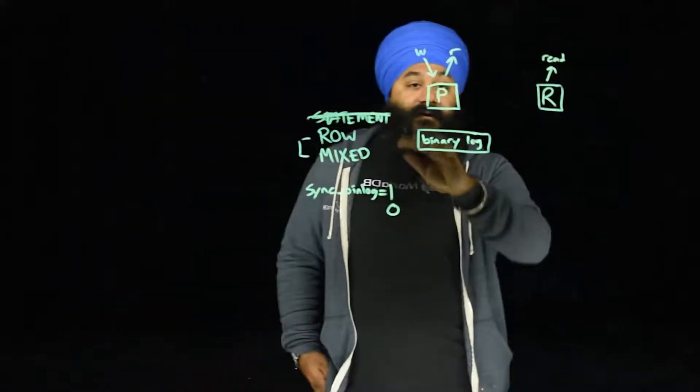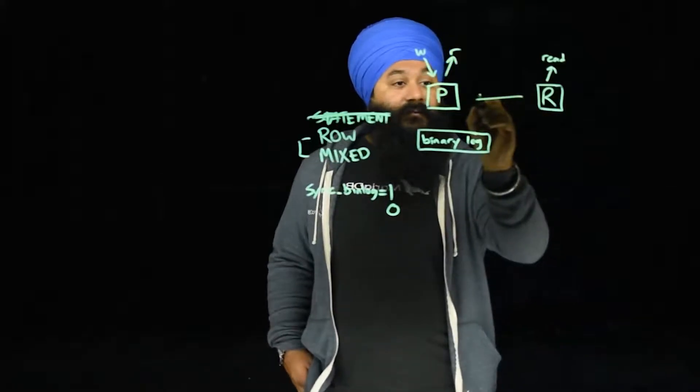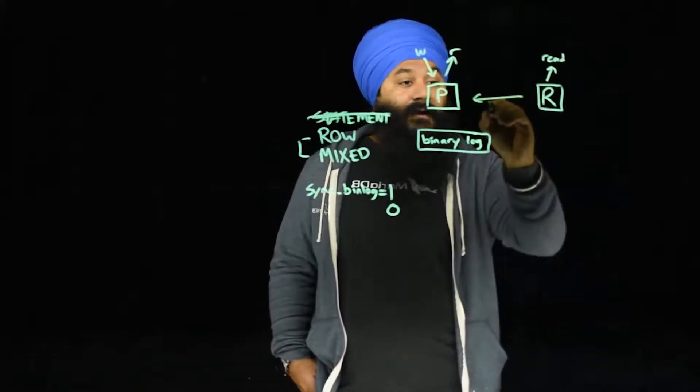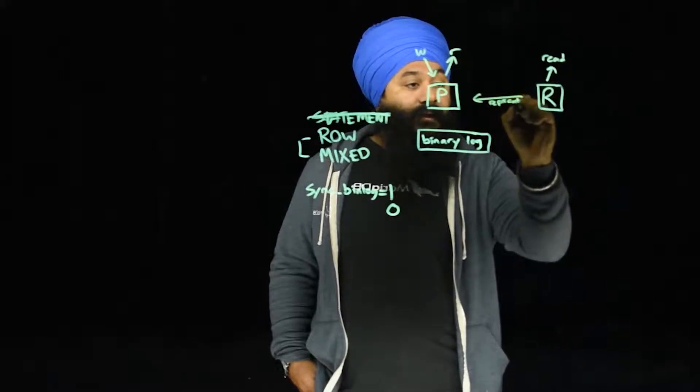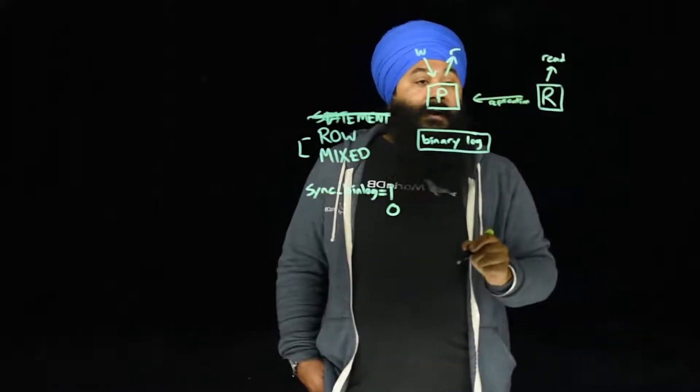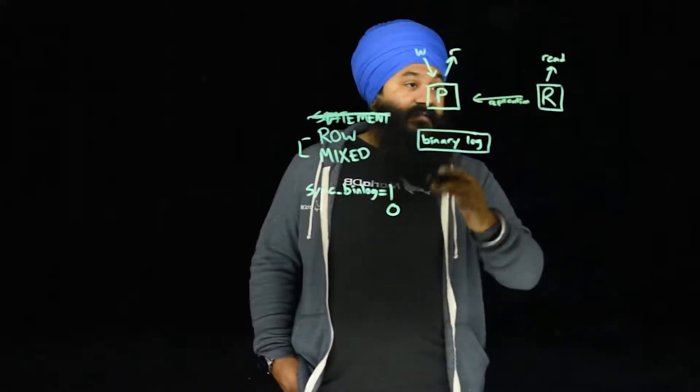So the binary log is written on the primary. How does the replica get that? The replica connects to the primary and says, I am a replica and I want to replicate. And the primary says, well, I have all these binary logs. They're available to you.